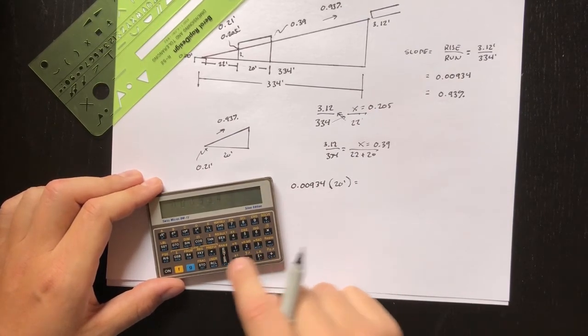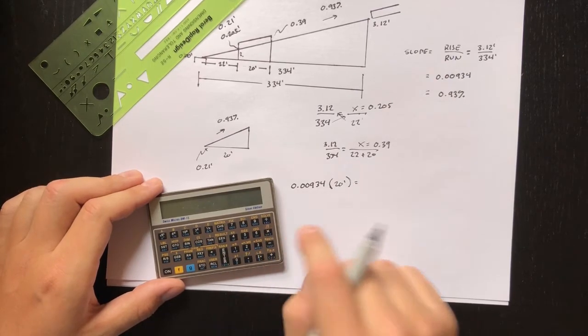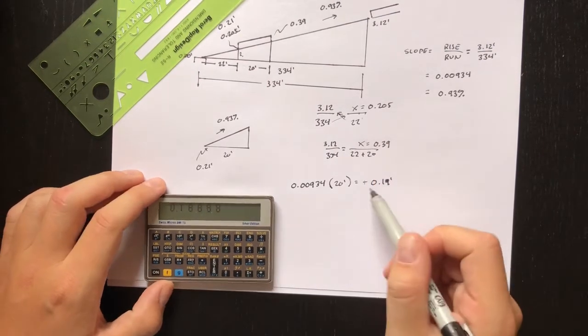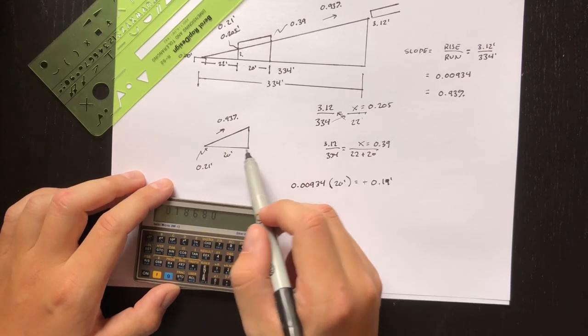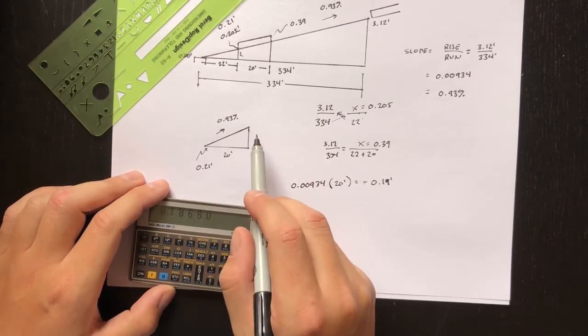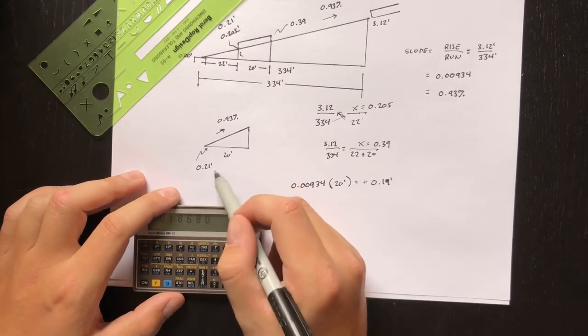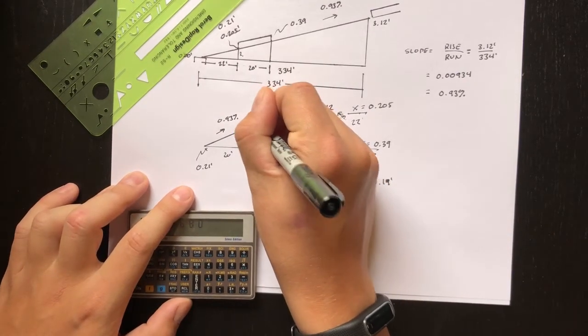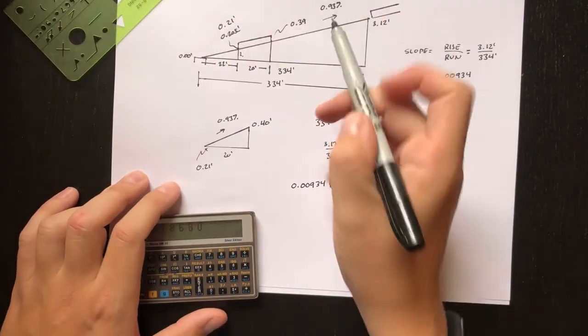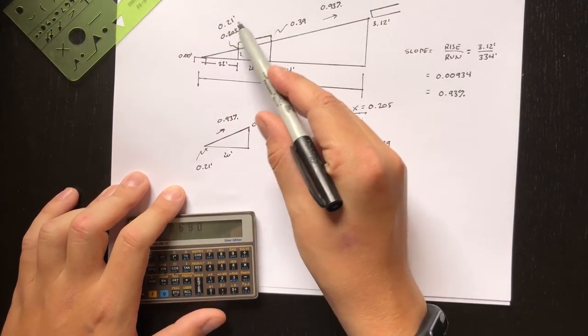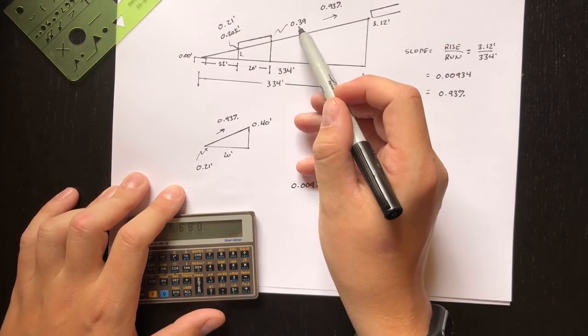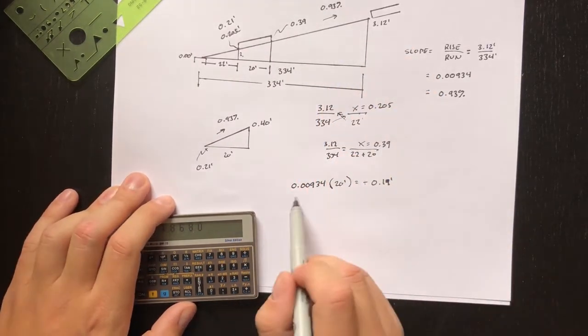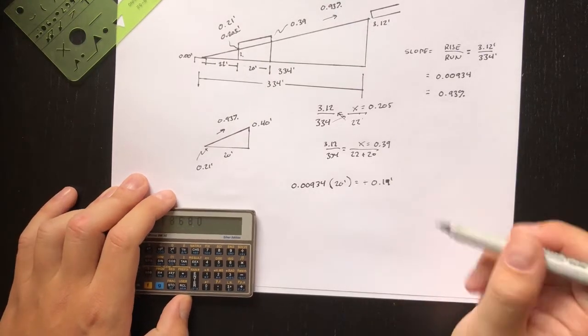So 0.00934 times 20 gives us 0.19 feet. That means this point, because we ran 20 feet uphill, should be 0.19 higher than this point. We know this point is already at 0.21, so if we go up another 0.19, we should get 0.40. If you compare to our actual diagram above, we've got the tailwater at 0.21 feet and the headwater at 0.39 feet. This really just came down to rounding error - I should have kept another decimal place. But that's basically how I do this on the fly when I'm actually out digging with the tractor.